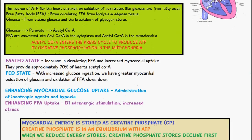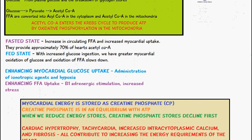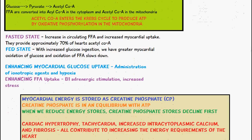When the body is in a fasted state, there is an increase in the circulation of free fatty acids and increased myocardial uptake, providing about 70% of the heart's acetyl-CoA. However, in a fed state after eating, there is increased glucose ingestion, leading to greater myocardial oxidation of glucose, and the oxidation of free fatty acids slows down.